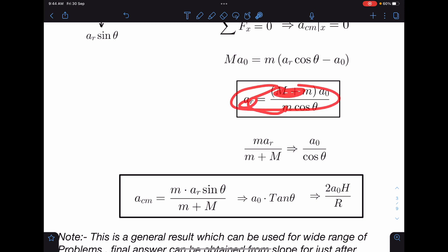m·aᵣ/(m + M), by using this equation, m·aᵣ/(m + M) I am going to get a₀/cos θ. So this sin θ will come here, so a₀tan θ it will become.